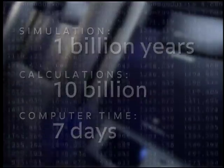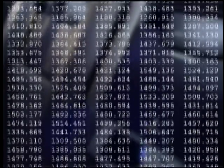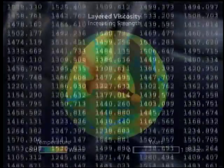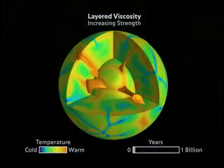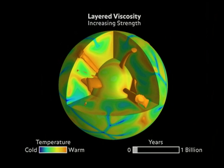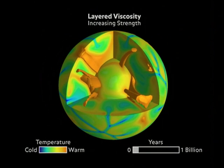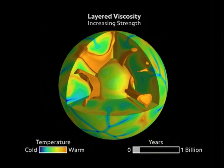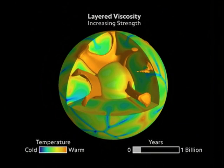To analyze the simulation output data, scientists create visualizations using color and graphics to represent the different variable fields in space and time.